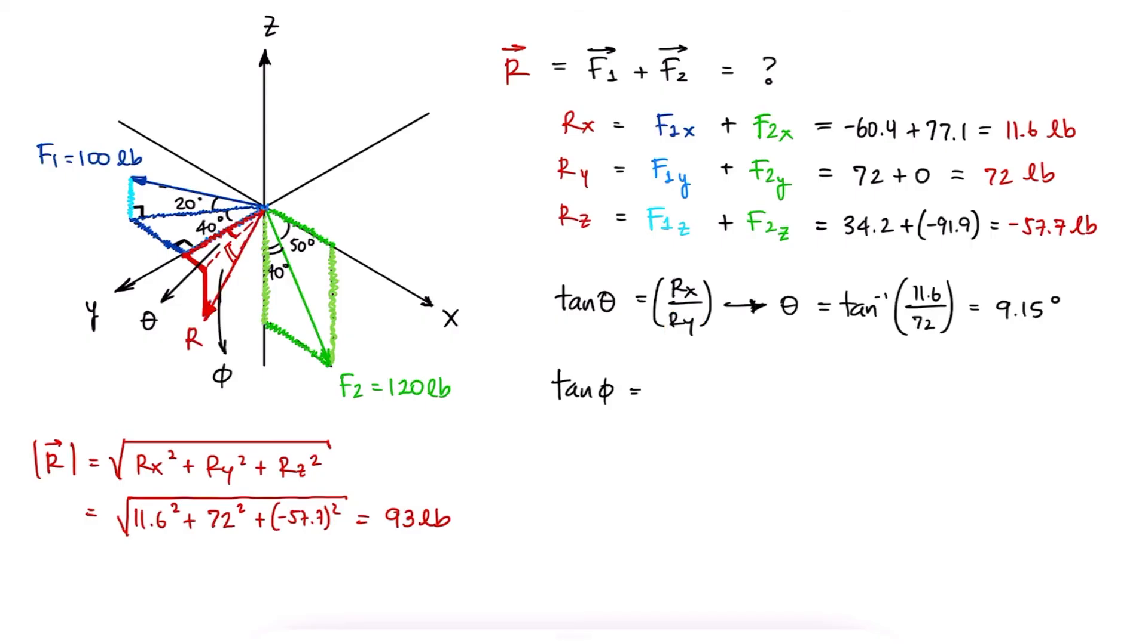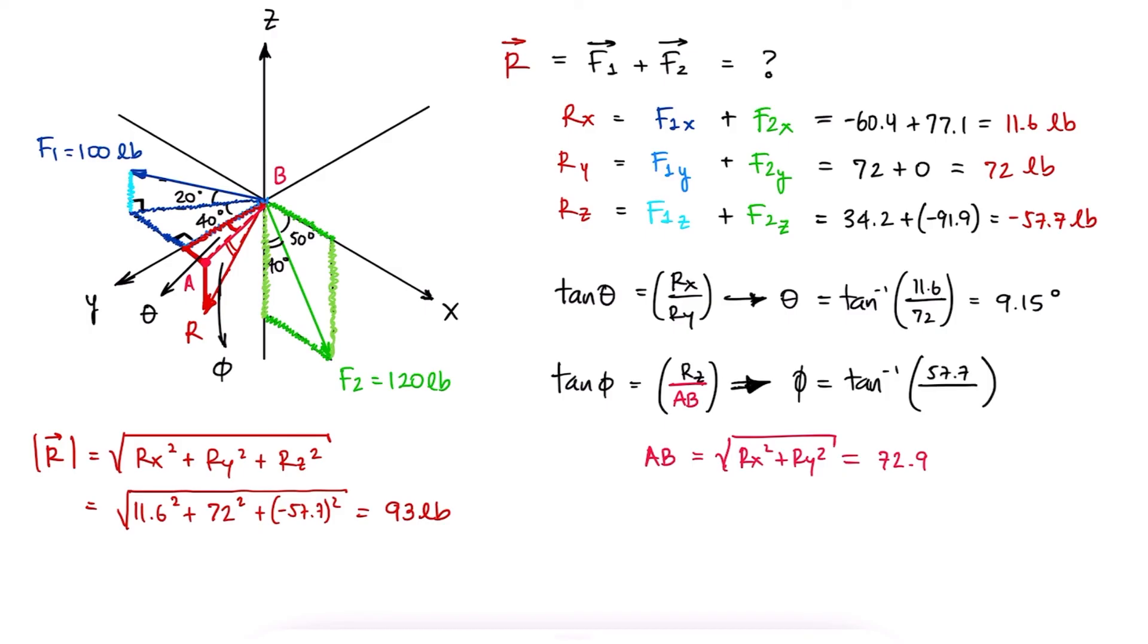And for angle phi, we can use the side opposite to phi, and the side adjacent to phi, which is the hypotenuse AB. This hypotenuse can be found with Rx and Ry, and we use the positive value of Rz, since in this case it's just the side of a triangle.